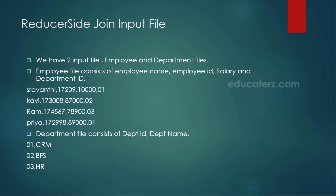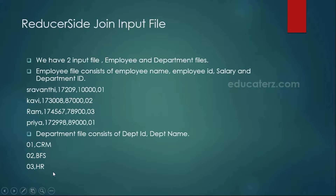Here in this example, we have two input files. Let us assume one is the employee and the department. The employee file consists of employee name, employee ID, salary, and department ID. We have another file called the department file which consists of department ID and the department name, which could be Customer Relationship Management, Banking and Financial Sector, or HR. These are all the different department types.